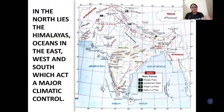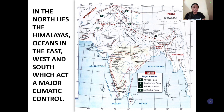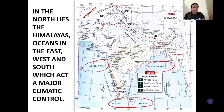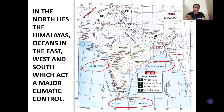Now the next factor is location, where the water bodies also play a very important role. India ke location ko dekhe toh it is surrounded by water bodies. Or we can say ki poora south India joh hai, tino taraf se paani se ghira hua hai, because it's a peninsula. Or ye bhi ek climatic control ki tarah kaam karta hai.